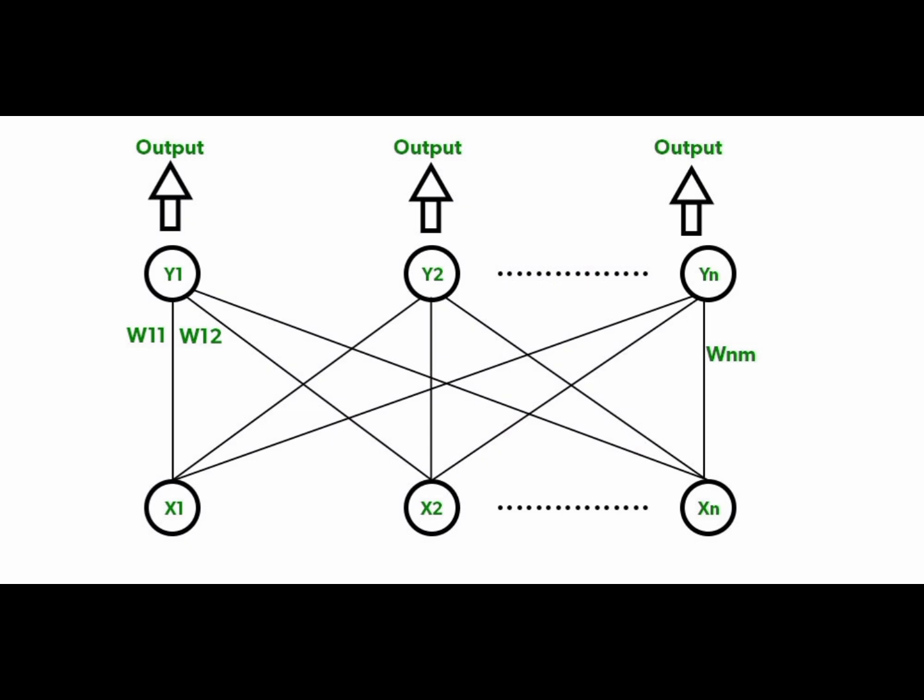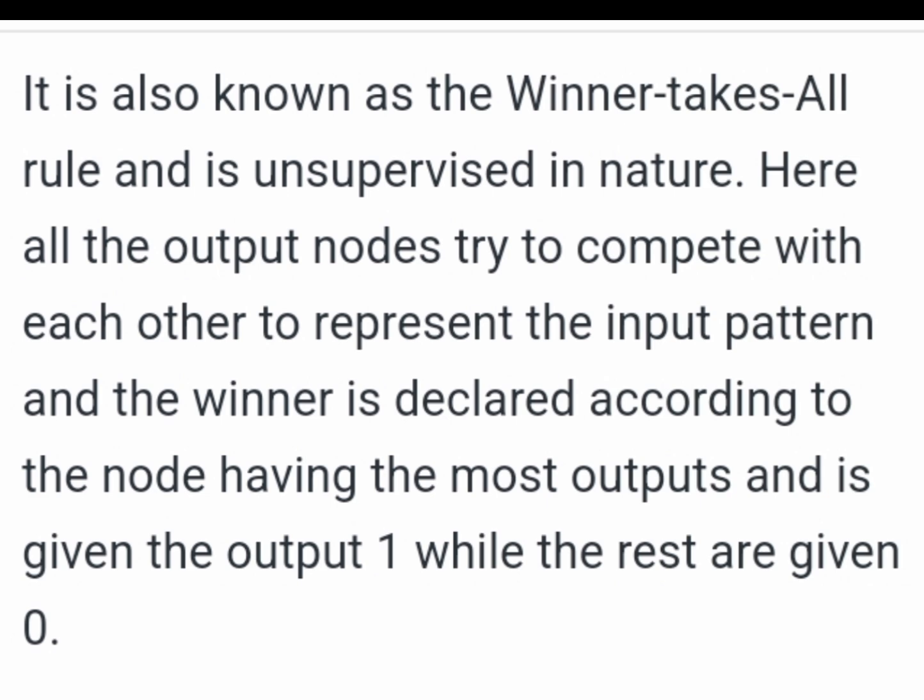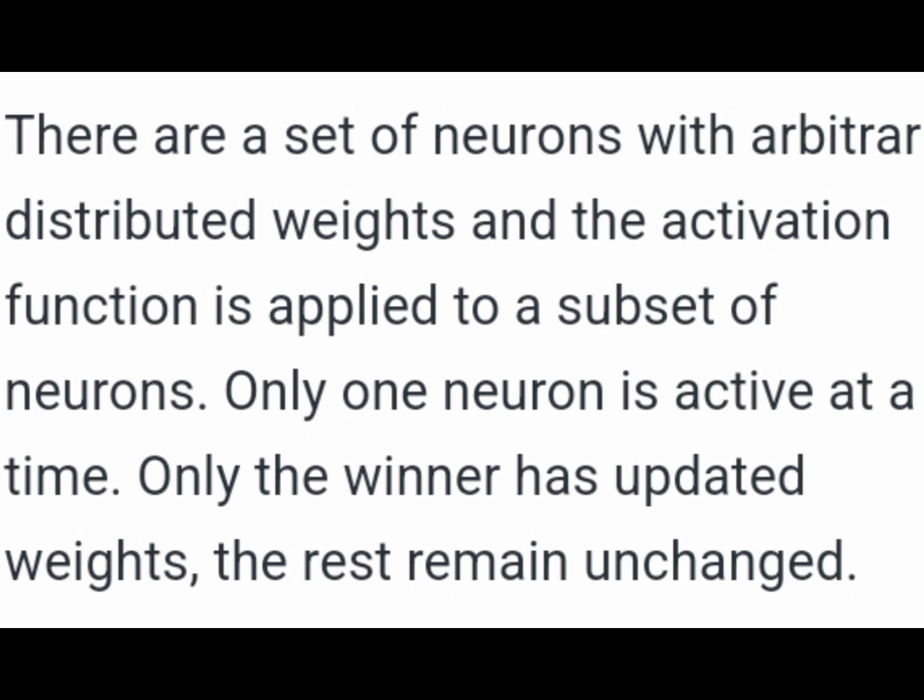The winner is given an output of one, and remaining layers are assigned zero, so only one neuron is active at the end. A simple example is when a teacher asks a question to students - all can raise their hands, but only one student can answer that question.